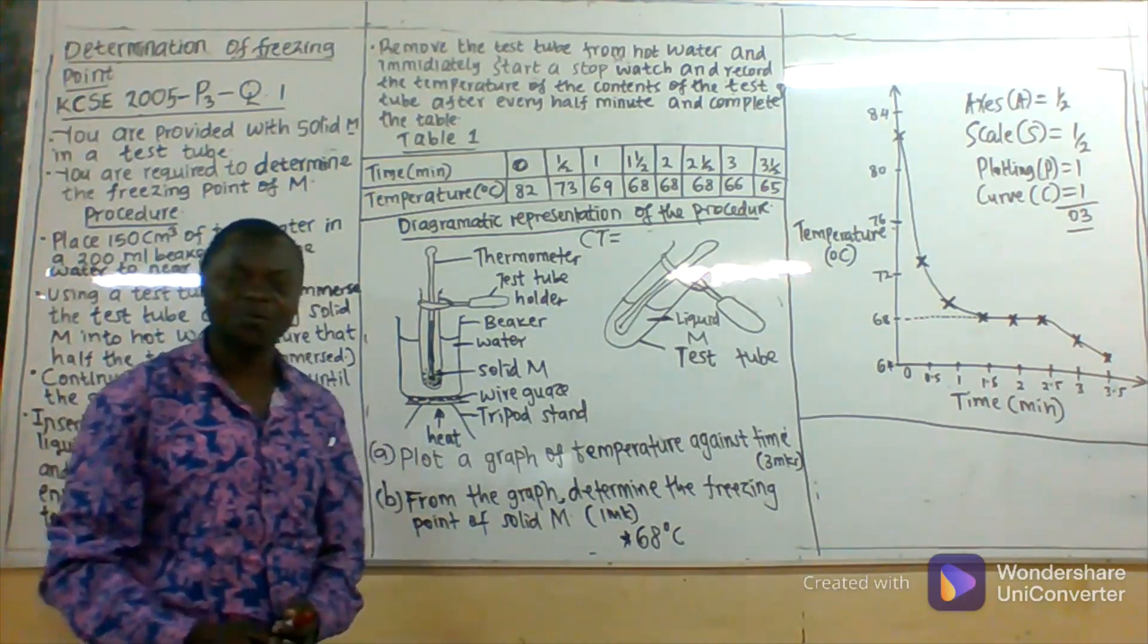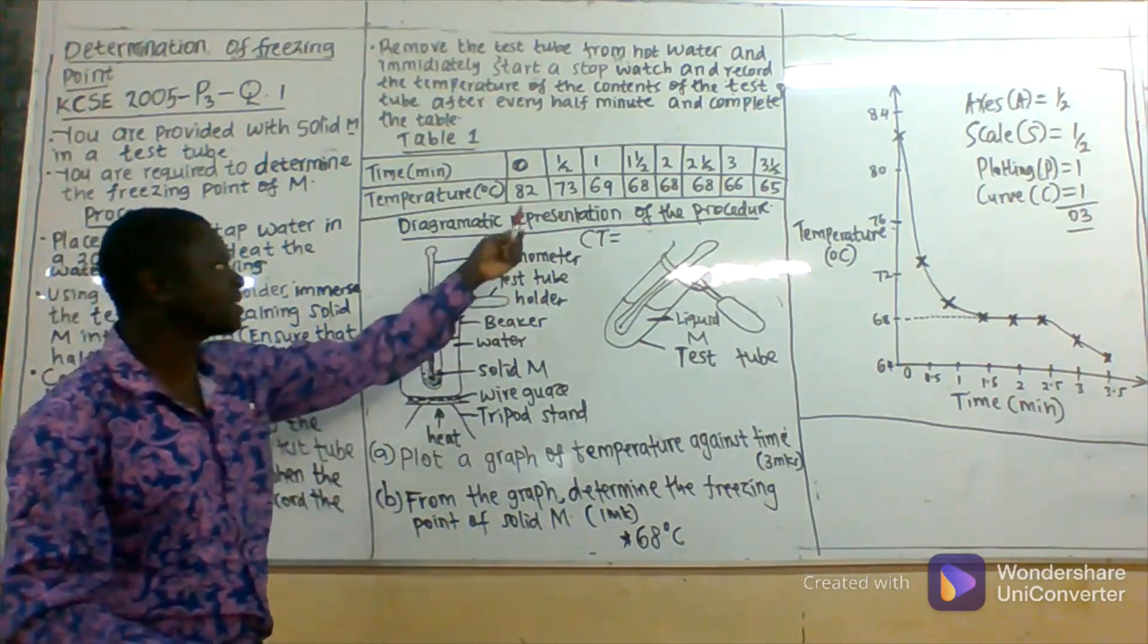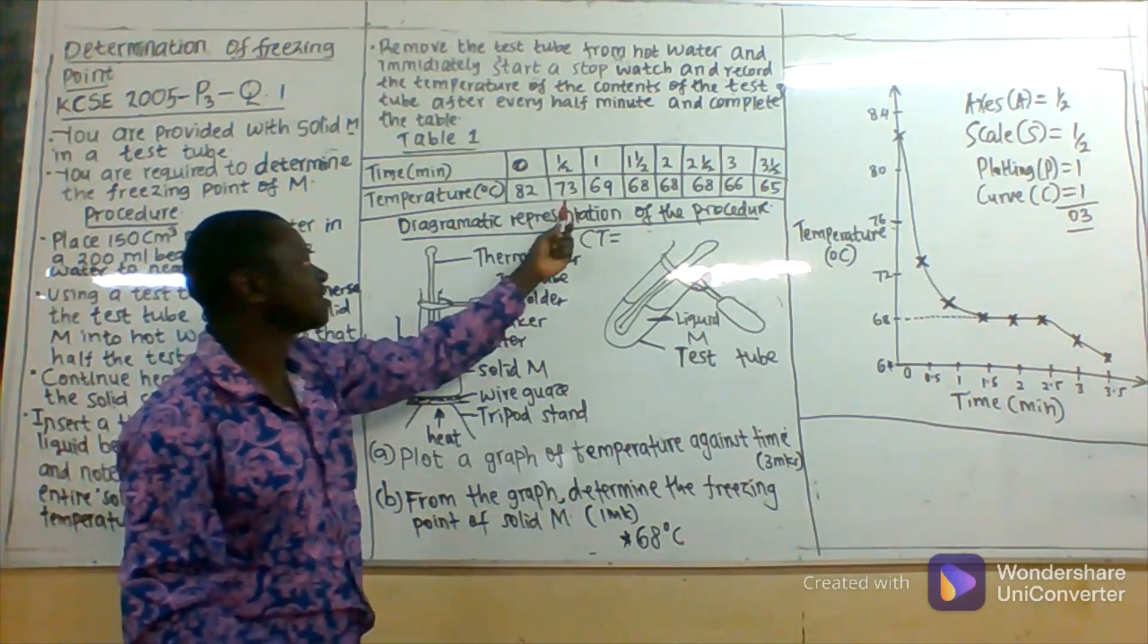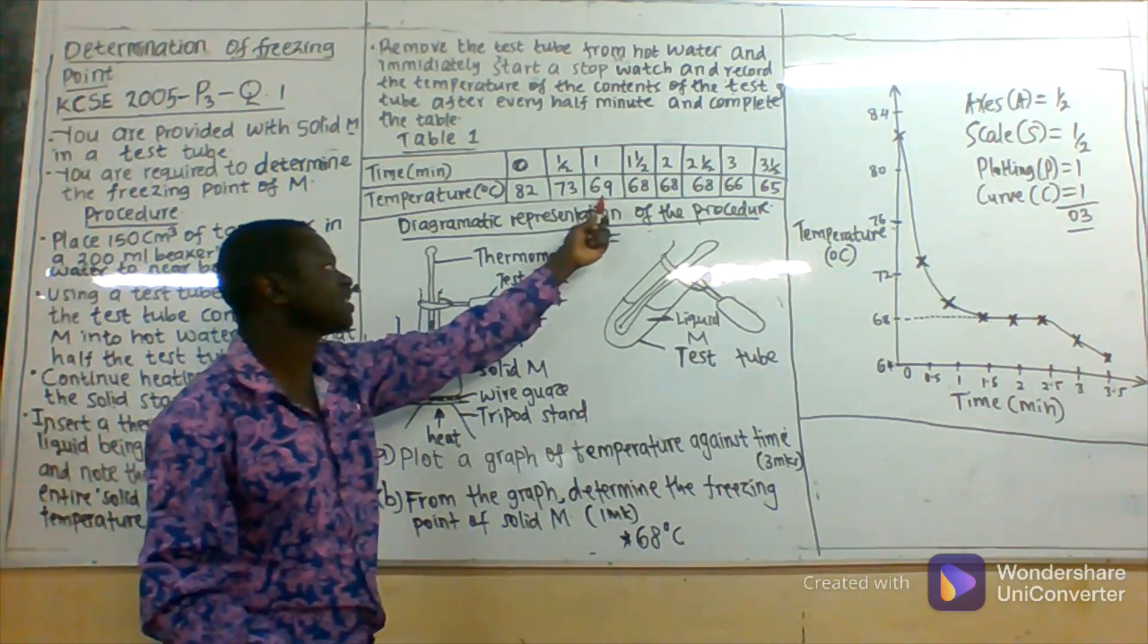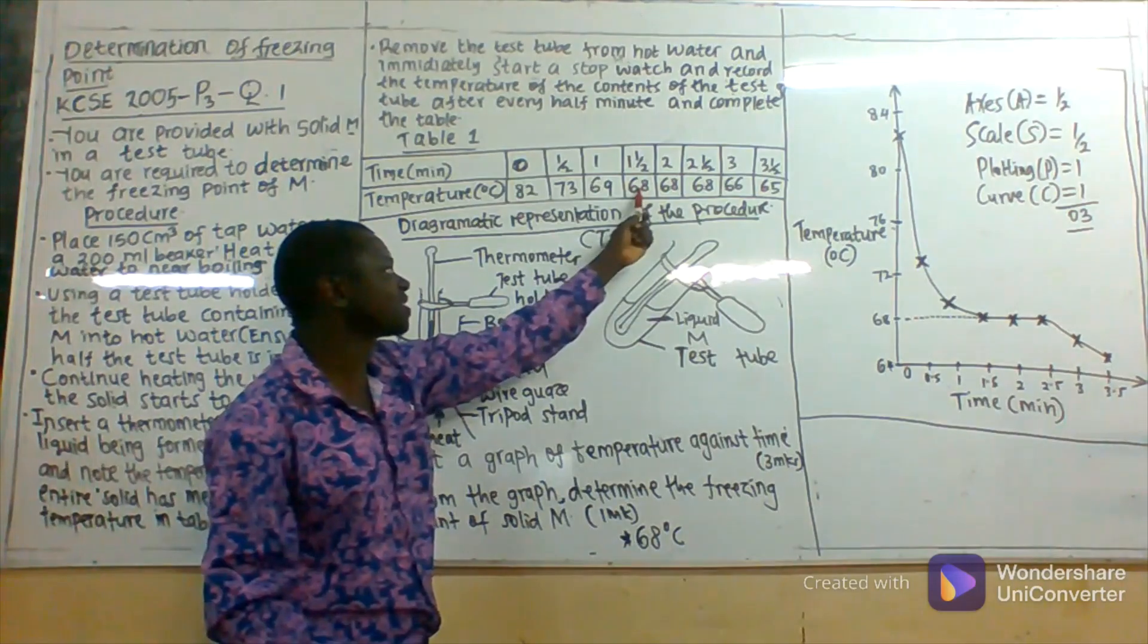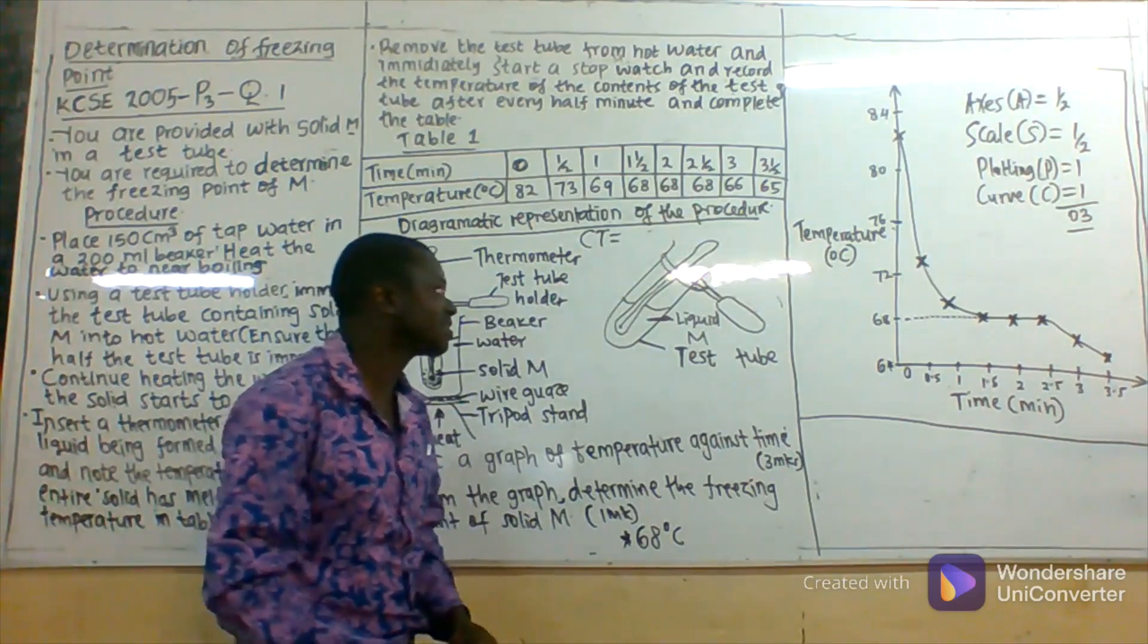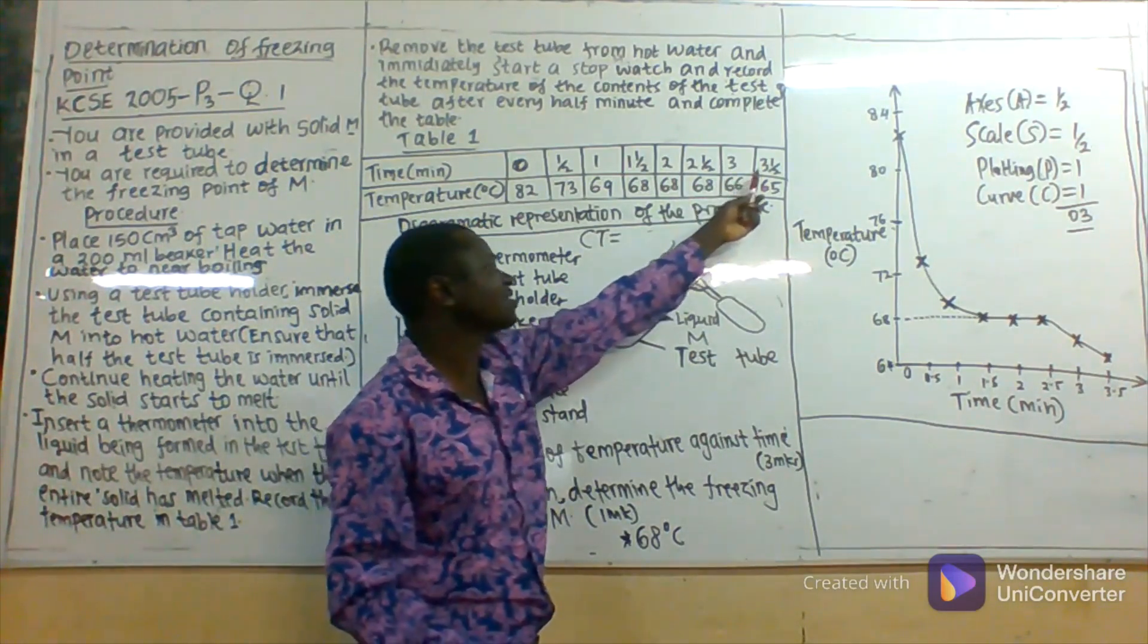When the temperature was recorded after every half minute, it was found that at time zero the temperature was 82 degrees Celsius. At time 0.5, the temperature was 73 degrees Celsius. At one minute, 69. At one and a half minutes, 68. It remained constant at two minutes and two and a half minutes at 68 degrees Celsius. At three minutes it dropped to 66. At three and a half minutes it dropped to 65 degrees Celsius.